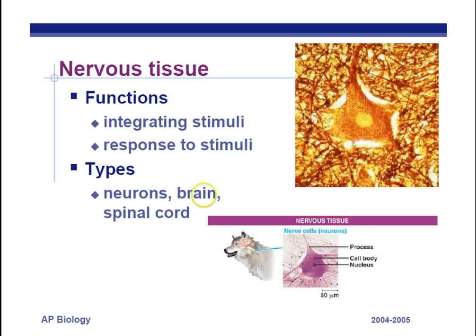Nervous tissue takes in stimuli and responds to stimuli. The two main types are neurons — found in the brain and spinal cord.